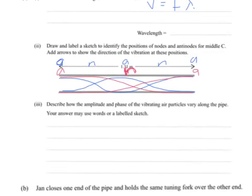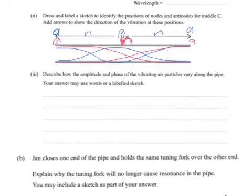Anyway, we'll move on. Part 3. Describe how the amplitude and phase of the vibrating air particles vary along the pipe. Your answer may use words or a labelled sketch. So there's a couple of ways to look at this. This is really getting at the concept of what these drawings above are supposed to represent.